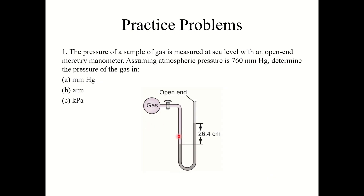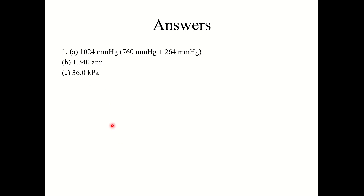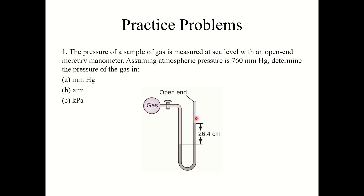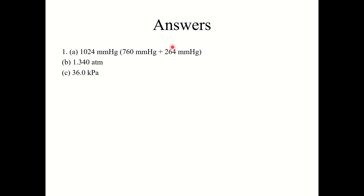Here is a practice problem illustrating that concept. The mercury line is above the atmosphere line and the height is 26.4 centimeters (264 millimeters of mercury). Since it's above the line, the gas pressure inside is greater than atmospheric, so we add: 760 mmHg plus 264 mmHg equals 1,024 mmHg. Then convert to atmospheres and then to kilopascals.